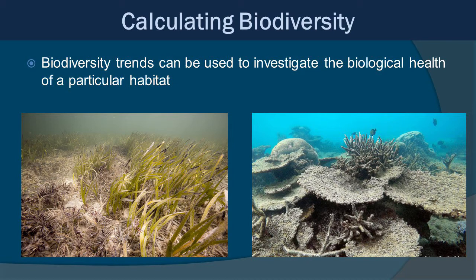By collecting biodiversity data, we get an insight into what's going on in a community, and these trends can be used to investigate the biological health of a particular habitat. For example, if you're constantly measuring biodiversity over time and notice it's decreasing, you know there's probably reason to worry — there might be some stressor. This could eventually lead to a mostly dead coral reef or a dying seagrass bed. Looking at slight changes in biodiversity can be an early warning that something is going wrong before it all crashes.